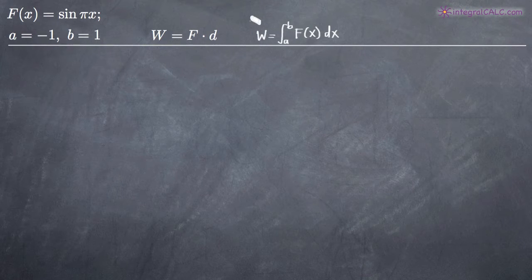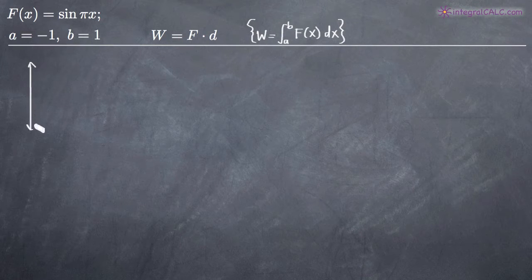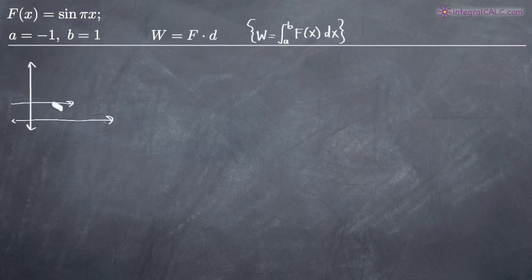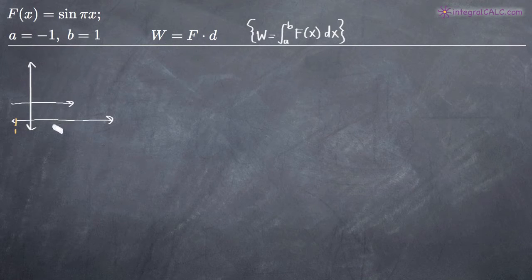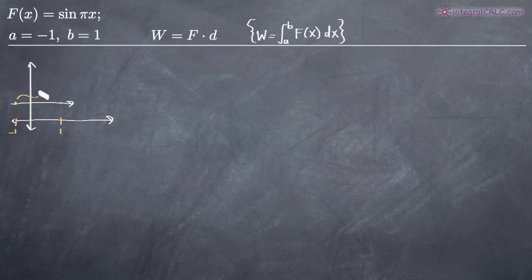We're going to be using this formula here to calculate work. What we're modeling is a variable force — we've got a particle that's moving along the x-axis, moving in this direction. And we've been asked to calculate the work done on the particle between negative one and positive one. The force is variable.